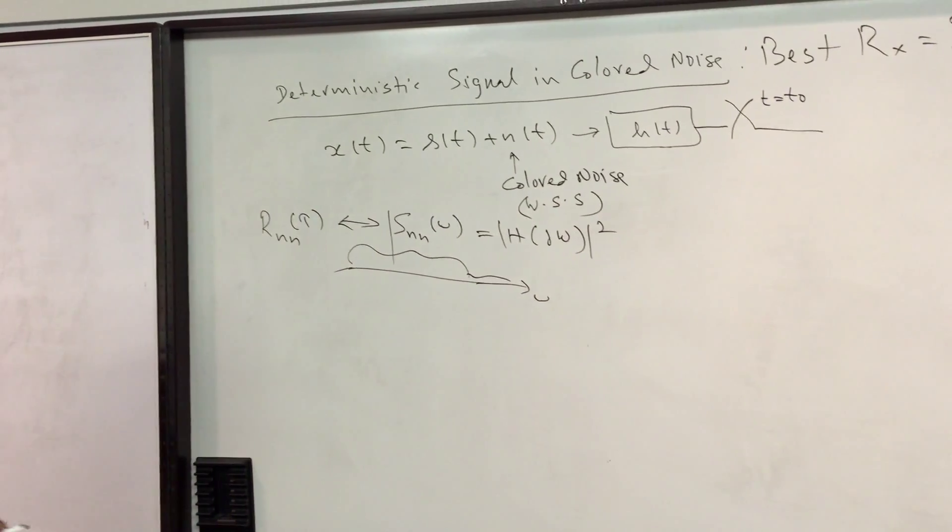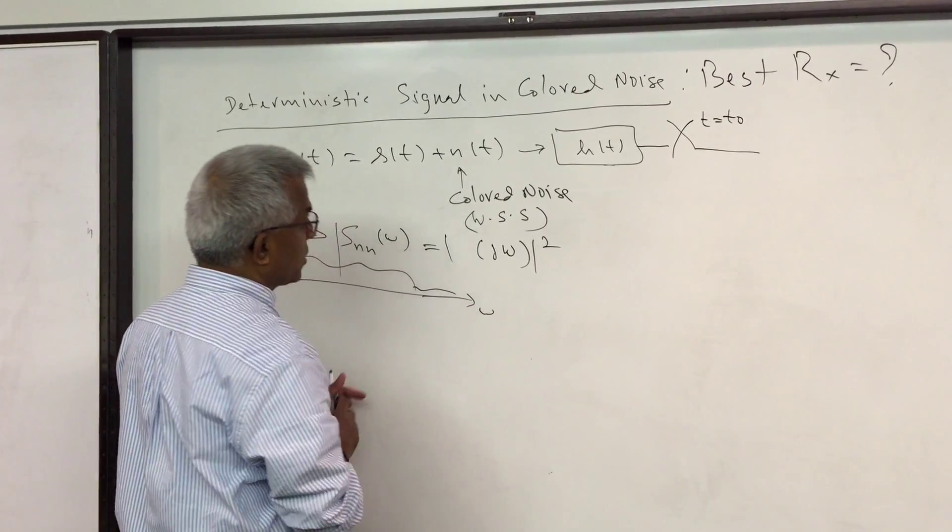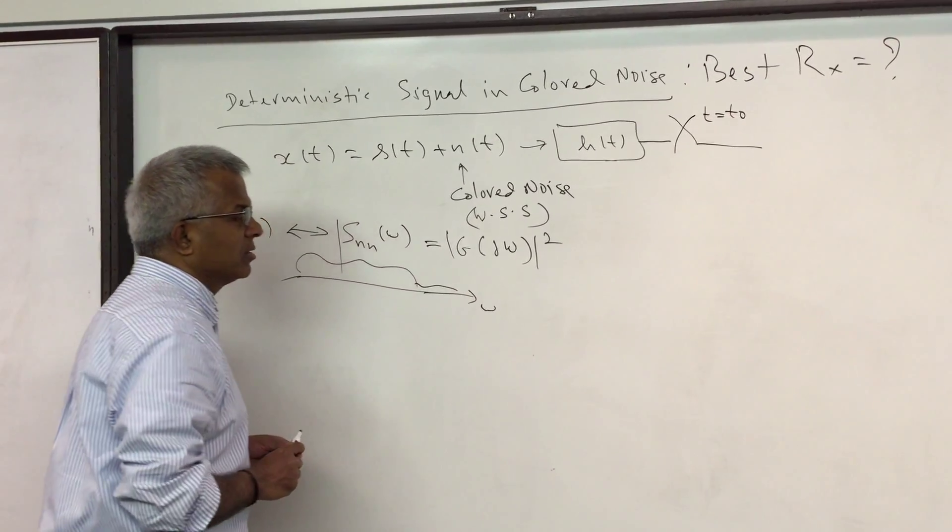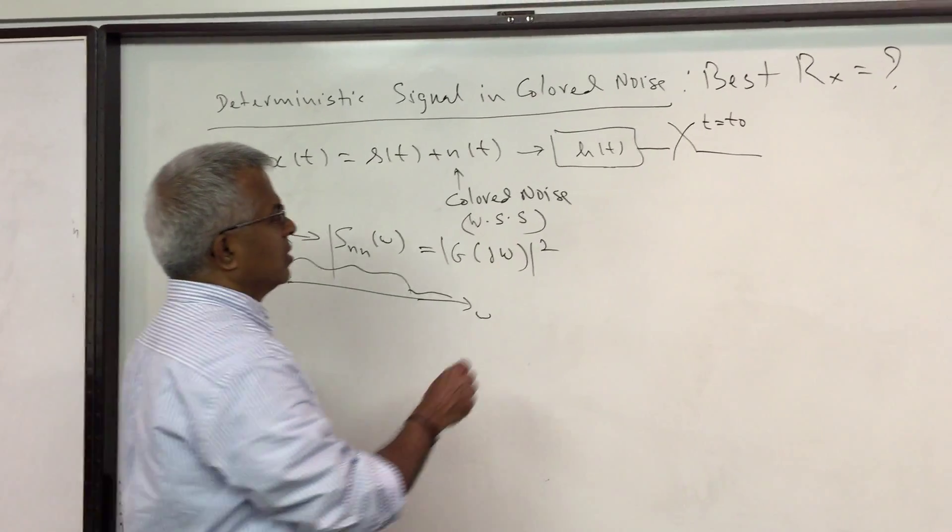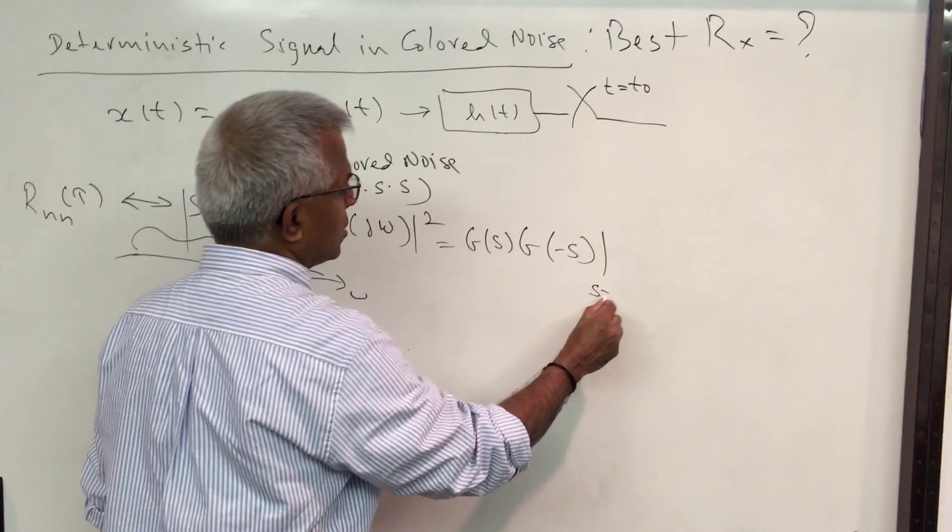And we call that filter to be the spectral factor. I'm going to call it here G(s), so this is of course G(s) multiplied by G(-s) is equal to S(ω).